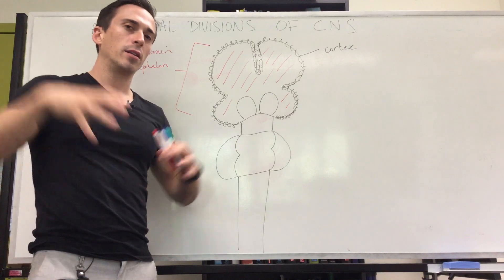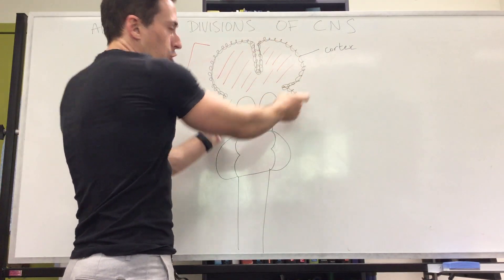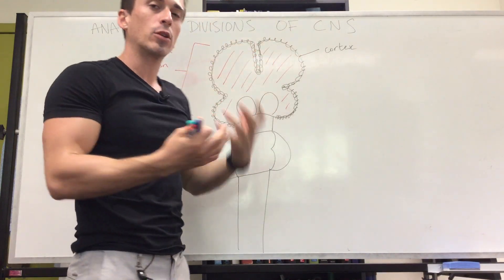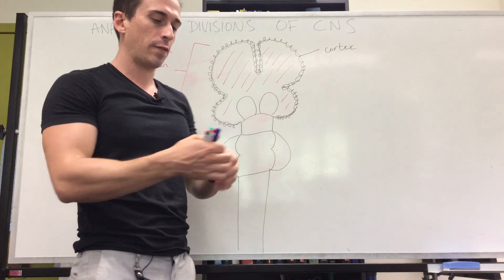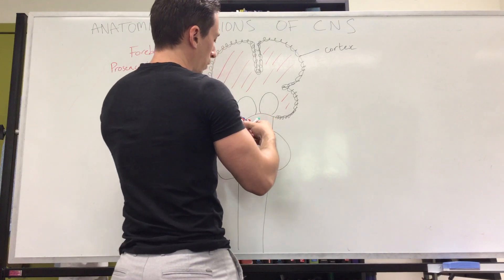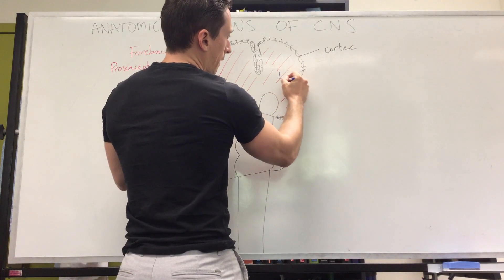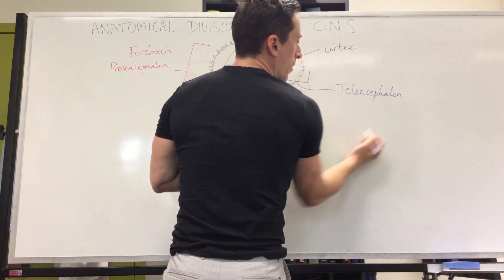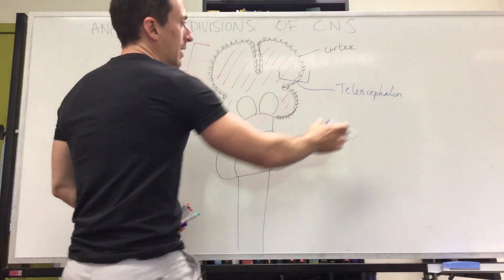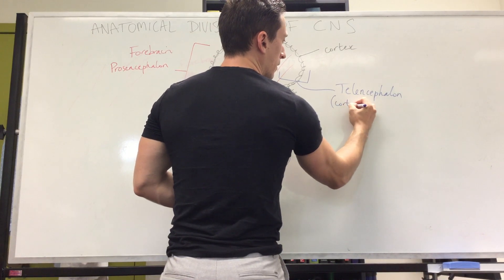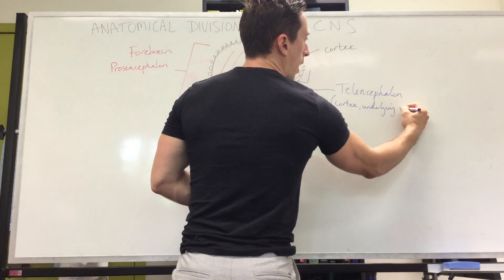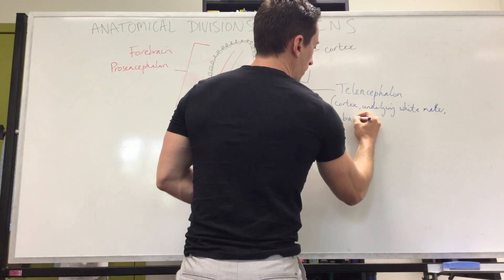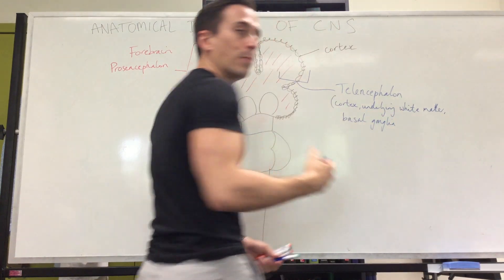The prosencephalon or forebrain can be divided into two more structures: the outer structures and the deeper structures. The outermost structures — the cerebral cortex and the deeper white matter along with something called the basal ganglia or basal nuclei — are known as the telencephalon. Note: the suffix 'cephalo' refers to brain. So the telencephalon comprises the cortex, the underlying white matter, and the basal ganglia, also known as the basal nuclei.